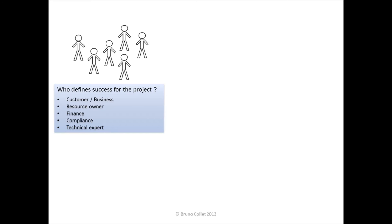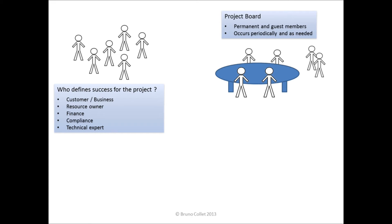Once we have identified these decision-making stakeholders, we need to make sure they are organized in a body that will enable effective and efficient decision-making. One such body is the project board. It's made of a number of people, and if necessary, some other people can join. There will be permanent members always sitting at the project board, and based on the situation — for example, the phase of the project or the difficulty faced — some other members will be added. It will occur periodically, for example every month, every two months, or every milestone, but also as needed when the project faces specific situations or difficulties. It has to be noted that the project board is independent from the organization's hierarchy — for example, some technical people can have considerable power within the project without being part of management or executives at the company level.